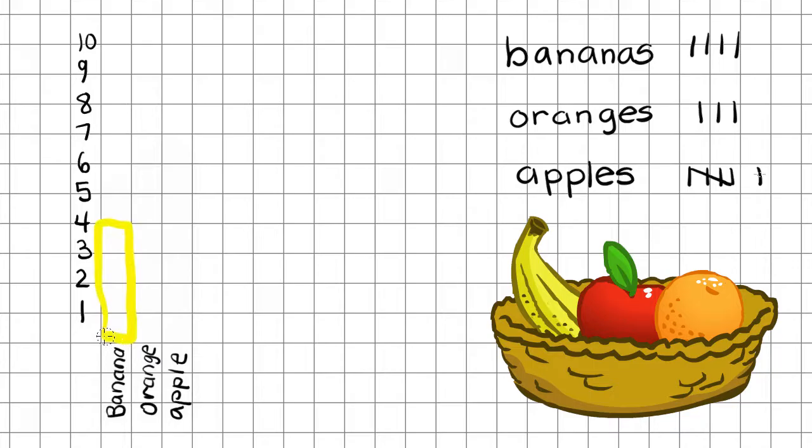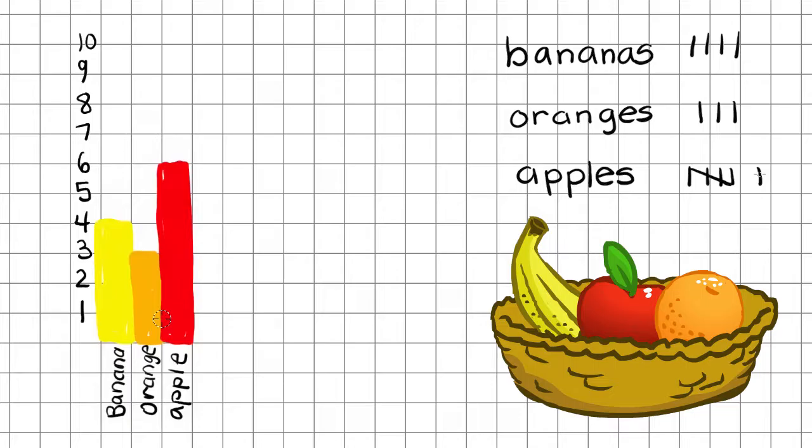In looking at my tally marks, I will color in the number of fruits. You have now created a data graph by graphing four bananas, three oranges, and six apples.